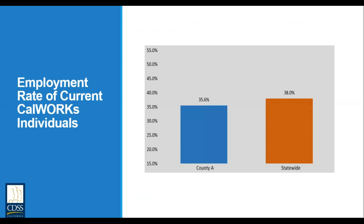Here's what the employment rate of current welfare-to-work individuals will look like graphically. On the left you see the county rate in blue — 35.6% — meaning 35.6% of all current welfare-to-work individuals in County A have a record of EDD wages in the measurement quarter. To the right you see the state rate of 38%, meaning 38% of all current welfare-to-work individuals in the state have an EDD wage record for the identical report quarter. The state rate includes all 58 counties, so County A is also included in the state rate.